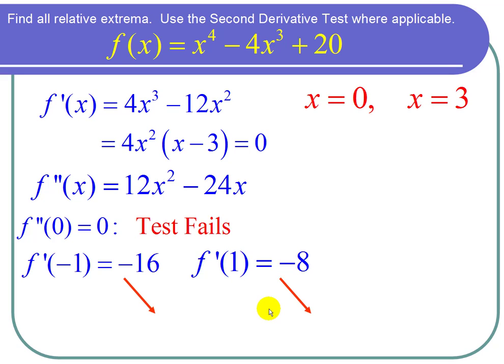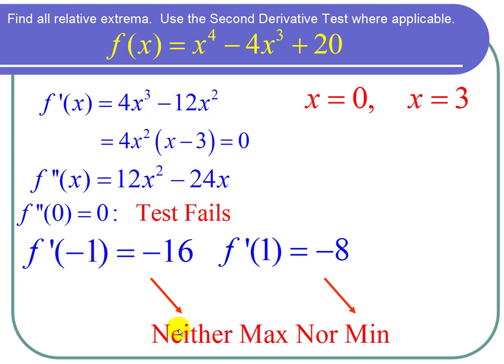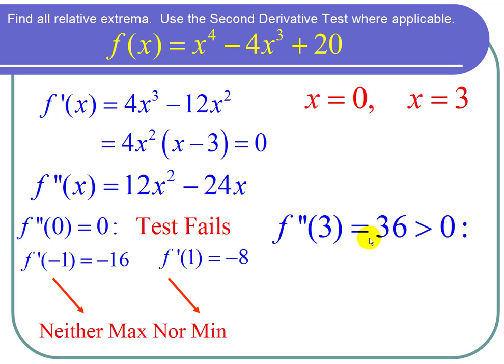Now let's look at x equals 3. I plug in x equals 3 into the second derivative for the second derivative test. What I got when I plugged it in was 36. 36 is greater than 0, and that means that it is concave up, or it looks like a smile. If it looks like a smile, that means it goes down and up. So we have a minimum at x equals 3.